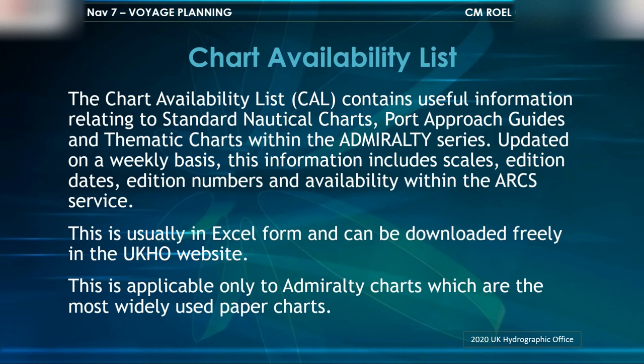The Chart Availability List or CAL contains useful information relating to standard nautical charts, port approach guides, and thematic charts within the Admiralty series. Updated on a weekly basis, this information includes scales, addition dates, addition numbers, and availability within the ARCs service. It is available in Excel format and can be downloaded freely from the UKHO website, and is applicable only to Admiralty charts, which are the most widely used paper charts.